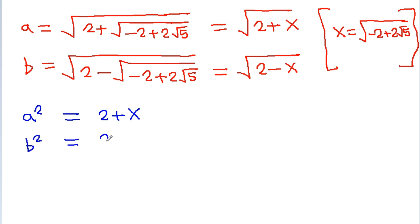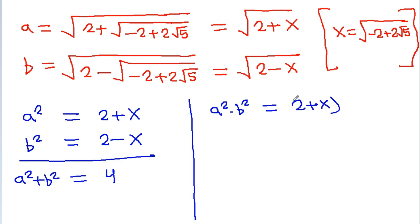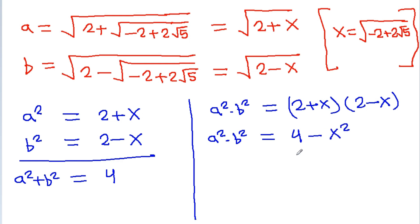If we add both equations, a² + b² = (2 + x) + (2 - x) = 4, and x cancels. For a²b², we get a²b² = (2 + x)(2 - x) = 4 - x².